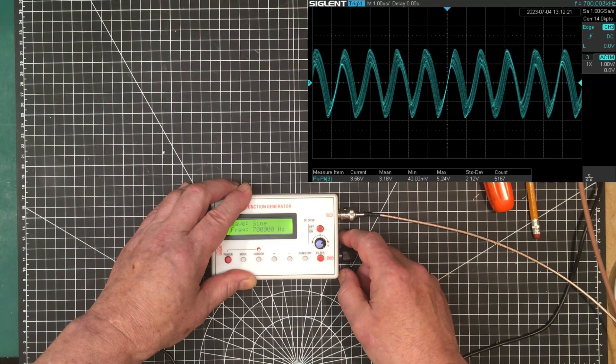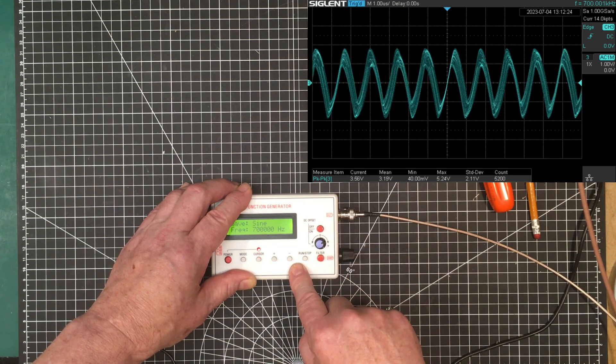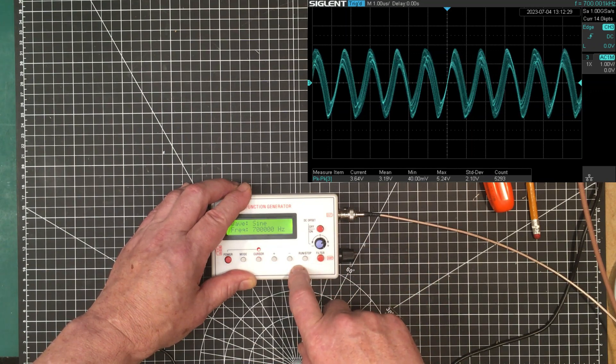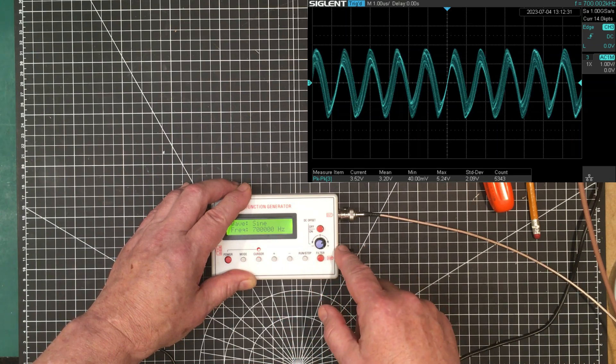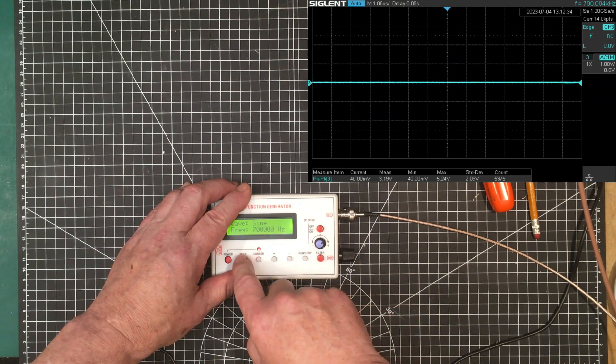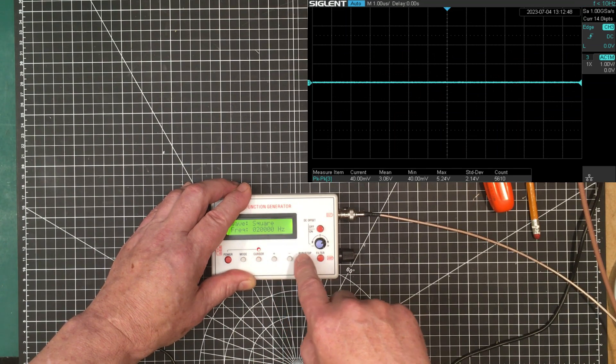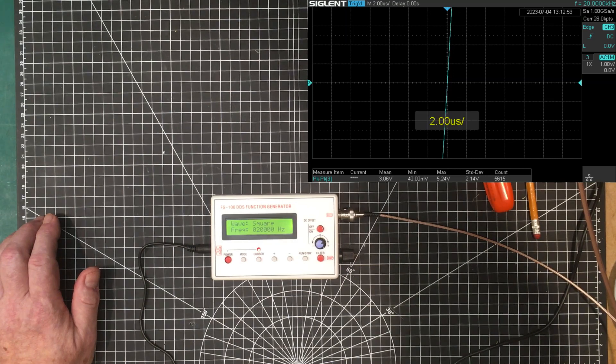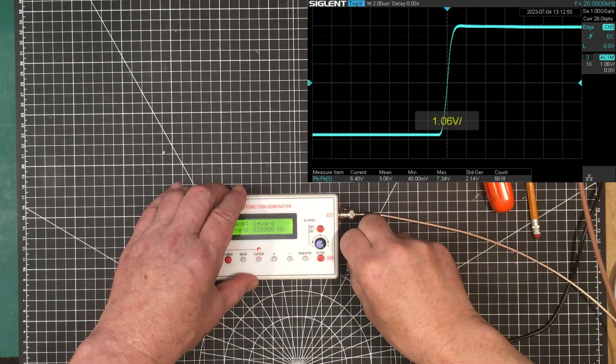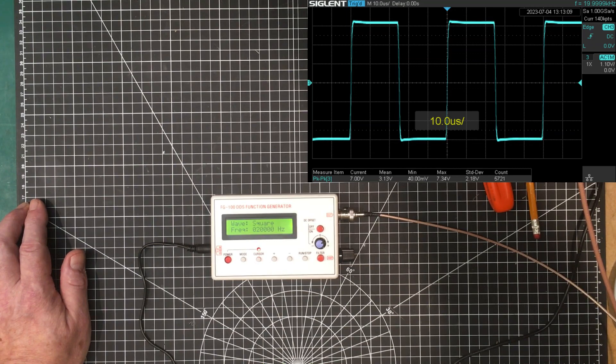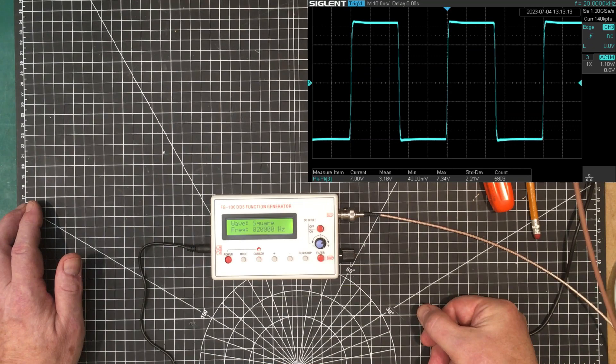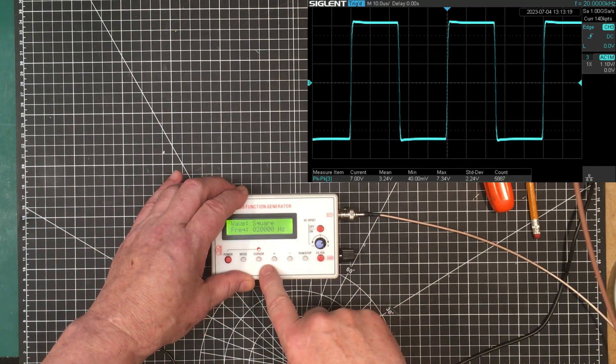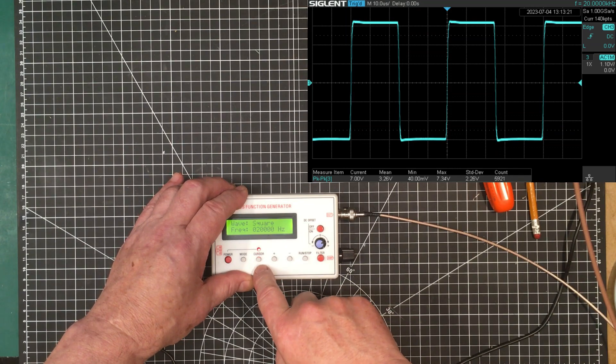Now we'll try some of the other waveforms. They're supposed to be good up to 20 kilohertz. Let's try square wave and let's have a look at what kind of square wave we can get here. Let's see we can turn this down a bit. A bit of jitter in it, it's a fairly decent square wave I guess, not terribly good. Let's back it down to 10 kilohertz, see if that's a bit better.